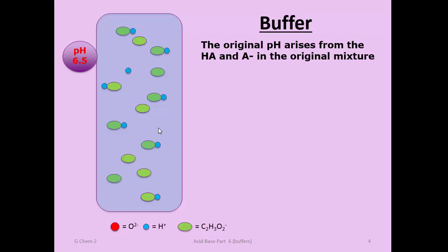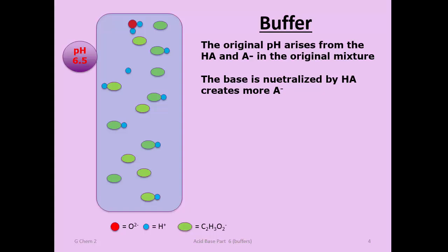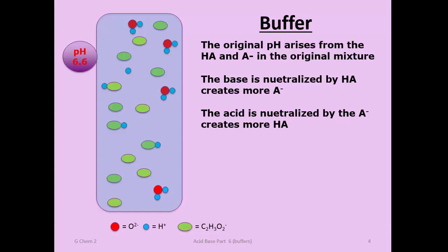When you add base, the hydroxide comes in and deprotonates one of the acetic acids, freeing up more acetate anion. No protons are freed up, so the pH isn't significantly changing. This continues as long as there are moles of weak acid available—the pH changes very little. On the other hand, the acid is neutralized by the conjugate base, the A minus.